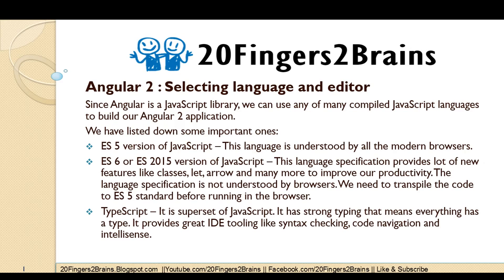You might be thinking what is this ES5 and ES6. These are the standards released by the JavaScript community. ES5 standard is basically understood by all the modern browsers. ES6 was released recently, so most browsers don't understand this standard, and you have to transpile the code to the lower standard so that the browser can understand and execute it.